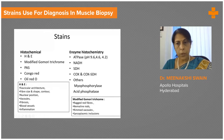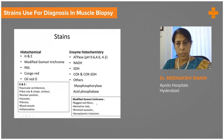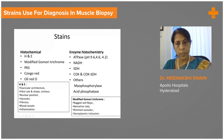Gomory trichrome, like all trichrome stains, is very useful in showing up fibrosis, which is an important component of chronicity. But it also shows other features like ragged red fibers, nemaline rods, and rimmed vacuoles, all of which stain red. Pictures of these will be shown.